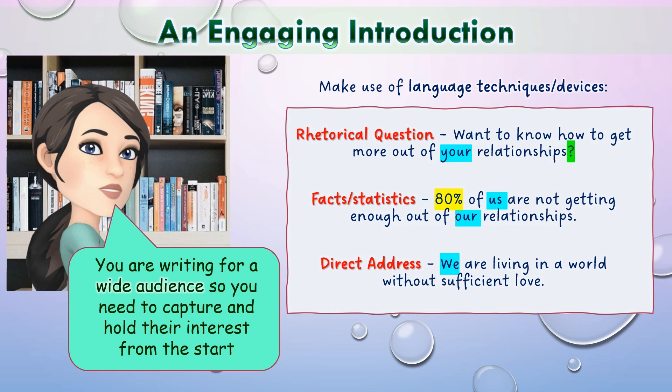For example: 'We are living in a world without sufficient love.' You'll notice that all three examples have direct address in them, and this is quite important. When you are writing an article, you are trying to get the reader on side so they trust what you've got to say. They need to feel comfortable with you and have confidence in what you're saying, and direct address is a fantastic tool for that.